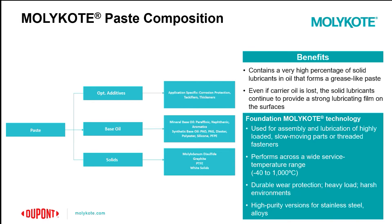Solid lubricants used within the paste formulation can include molybdenum disulfide, graphite, PTFE, or white solids. The base oils used can range from mineral base oils to synthetic base oils, with synthetic base oils such as PAO, PAG, and POE used for more specialized high-performance formulations — and these synthetic base oils will typically add to the cost. Additives are a much smaller percentage of the overall formulation and are chosen based on application-specific needs to provide corrosion resistance, oxidation resistance, or tackifiers to allow the paste to stay in place.